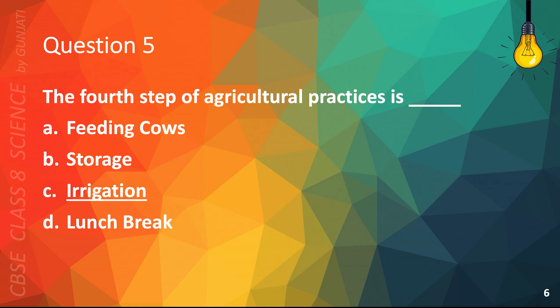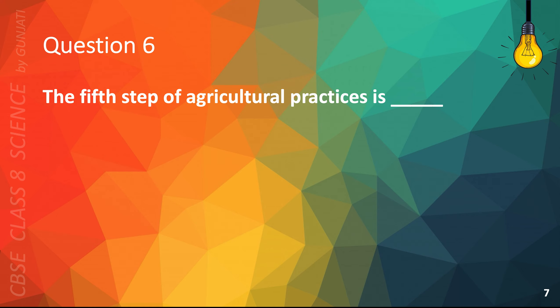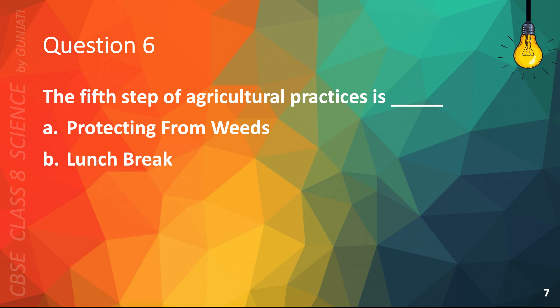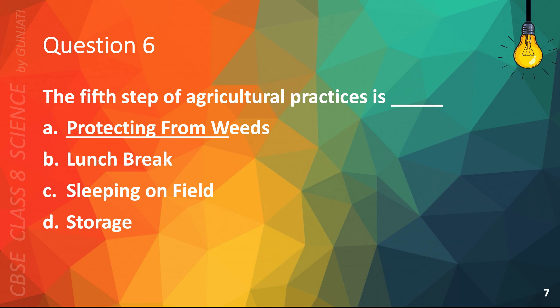Question 6. The fifth step of agricultural practices is: A. Protecting from weeds, B. Lunch break, C. Sleeping on field, or D. Storage. The correct answer is A. Protecting from weeds.